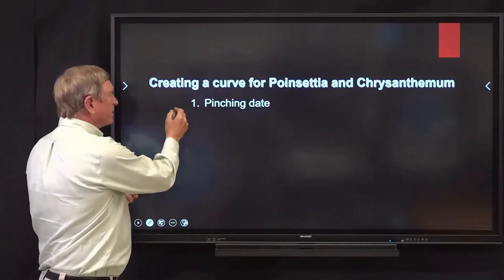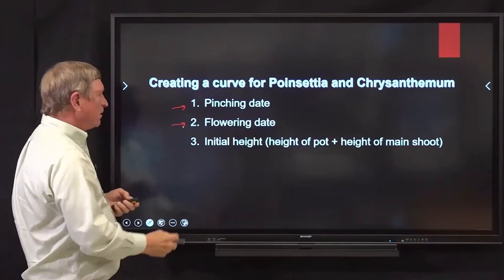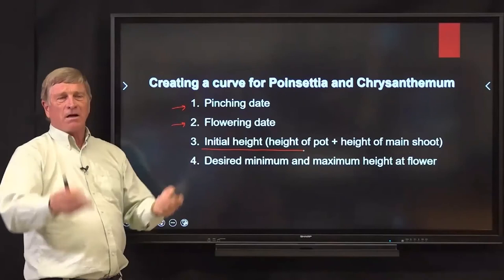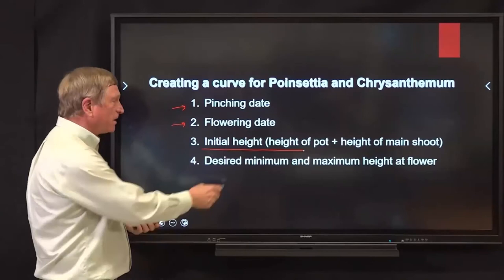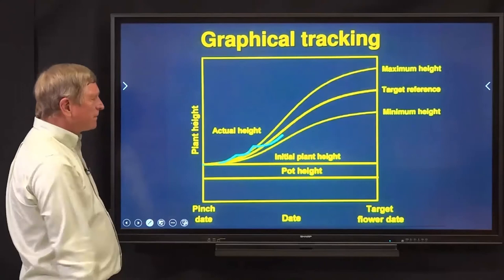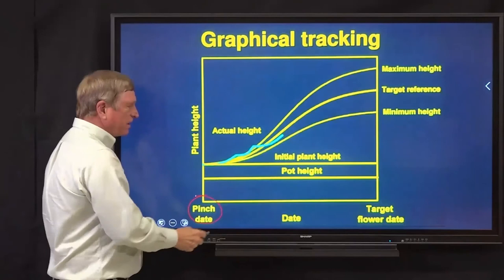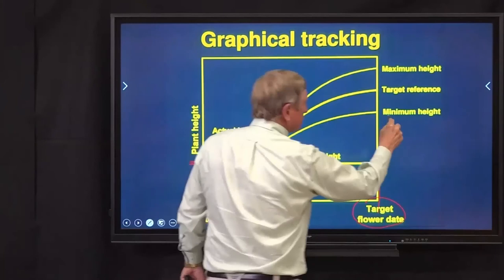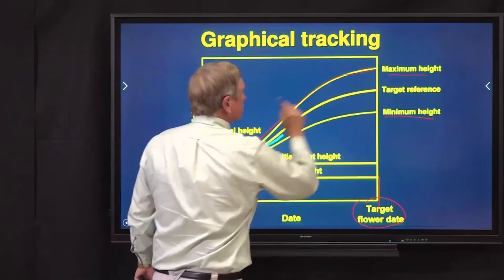From these two curves, we developed graphical tracking curves for poinsettia and floris chrysanthemum. To create the curve, you start with a pinching date and a flowering date. You need to know the initial height of the main shoot at the time of pinch — that's pot plus shoot height. You need the desired plant height at finish — most growers have a final height window, say 16 to 18 inches, representing minimum and maximum. And you need to know the stem elongation curve — how you get from initial height to final height.